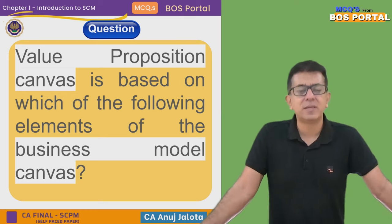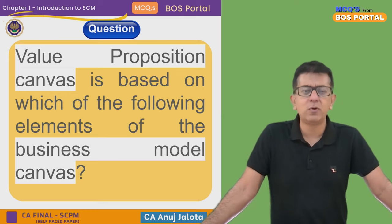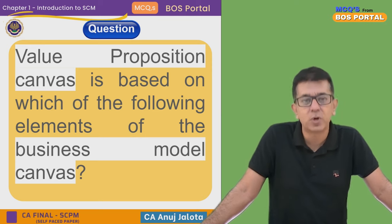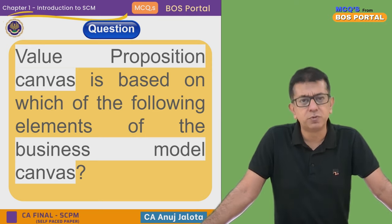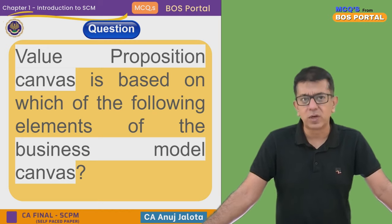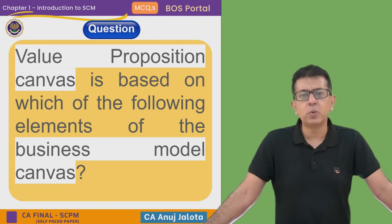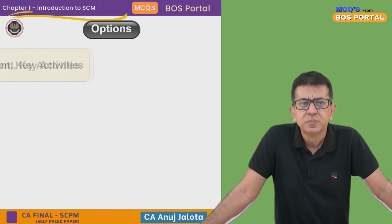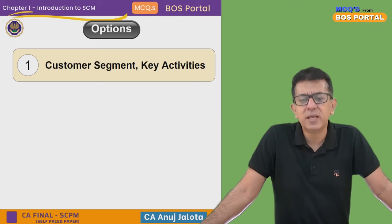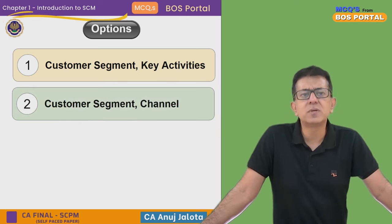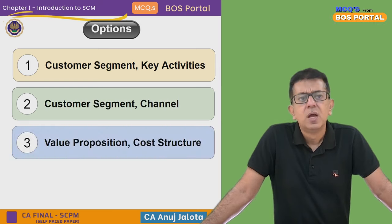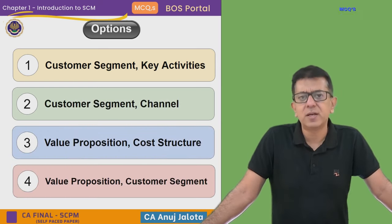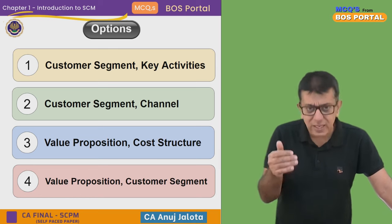We'll start with today's MCQ. This is from Chapter 1: Introduction to SCM. The question is: Value Proposition Canvas is based on which elements of Business Model Canvas? To answer this, you should know what Business Model Canvas is and what Value Proposition Canvas is. The four options are: first, customer segment and key activities; second, customer segment and channels; third, value proposition and cost structure; and lastly, value proposition and customer segment.